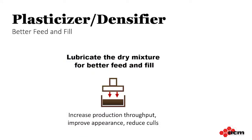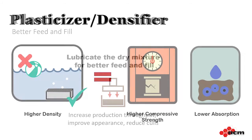Besides helping to disperse the cement, plasticizers and densifiers act as a lubricant to allow the dry mixture to feed, flow, and fill the molds better. This produces products with higher densities, increased compressive strength, and lower absorptions.